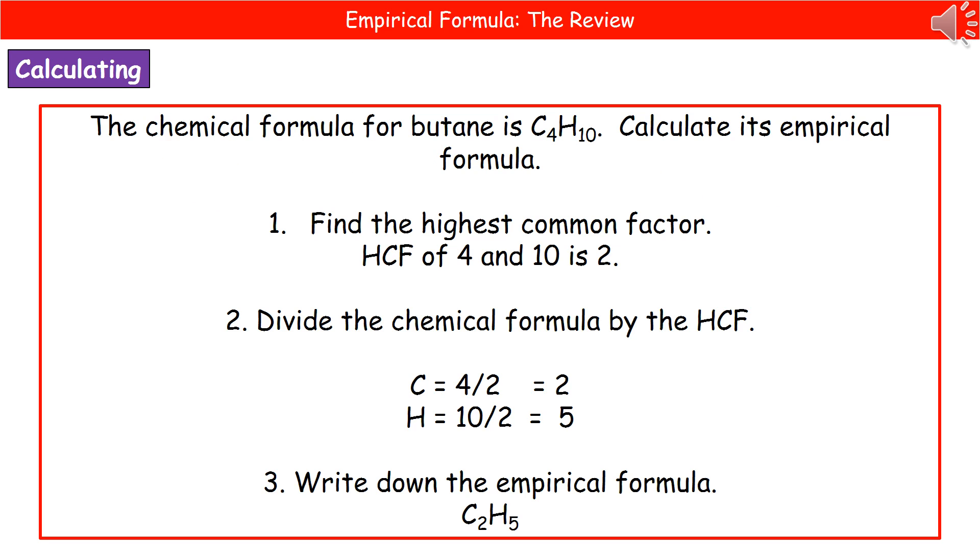So when you get asked to calculate the empirical formula, you could get a question like the one here. The chemical formula for butane is C4H10. Calculate its empirical formula.